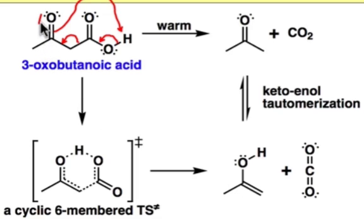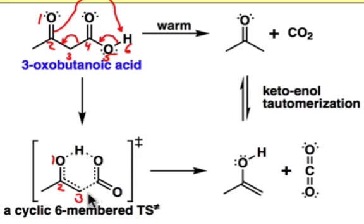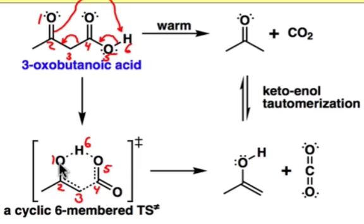By a conformational change involving these six atoms, it's possible to set up a cyclic transition state in order to allow that electron flow to take place smoothly and continuously, so that the passage of the hydrogen from the β-keto side all the way over to what will become the enol oxygen is easily facilitated.